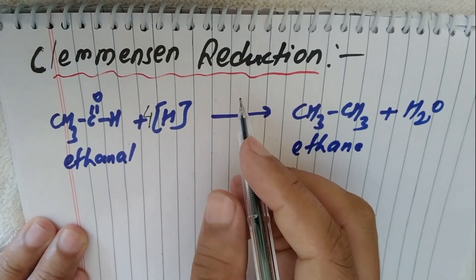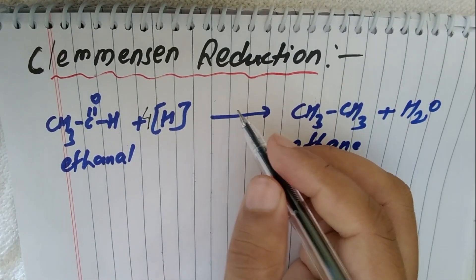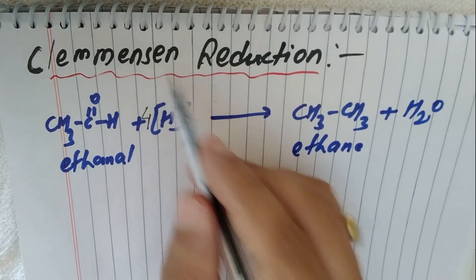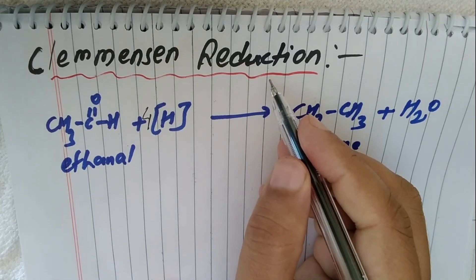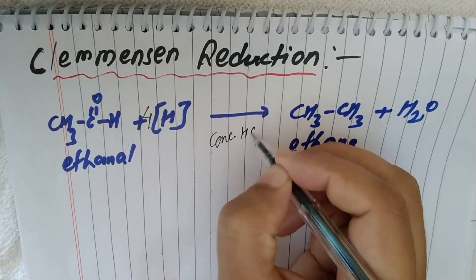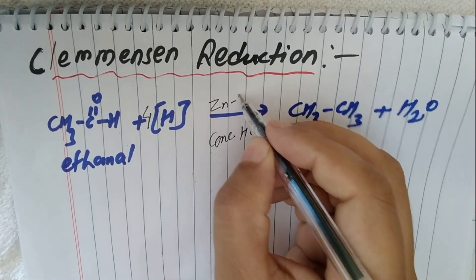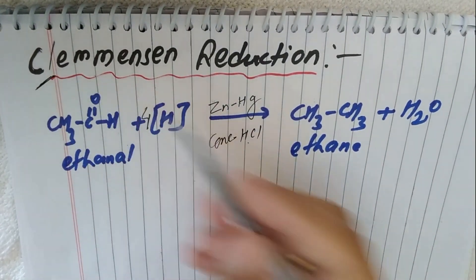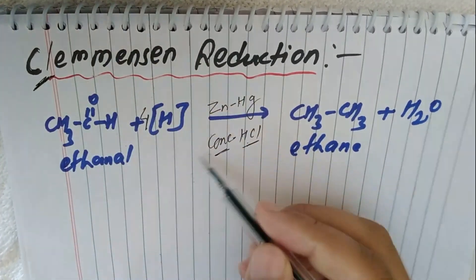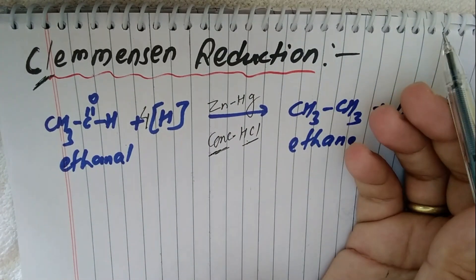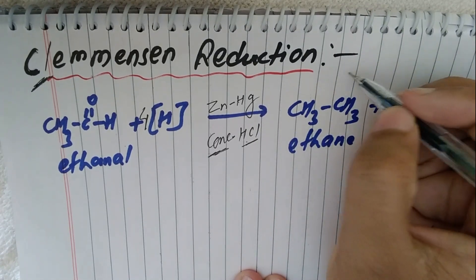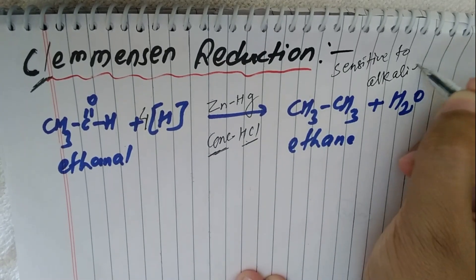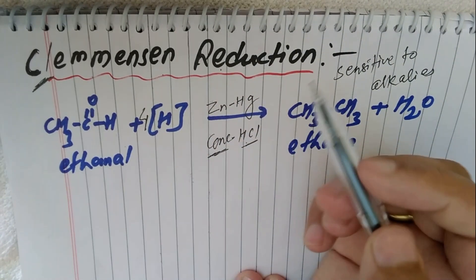In Wolff-Kishner reduction we use hydrazine, basic medium KOH, and glycol at about 180 to 200 degrees Celsius. But in Clemmensen reduction, it occurs in acidic medium — we use concentrated HCl and zinc amalgam (Zn/Hg). Clemmensen reduction is widely used for the reduction of aldehydes or ketones which are sensitive to alkalis.